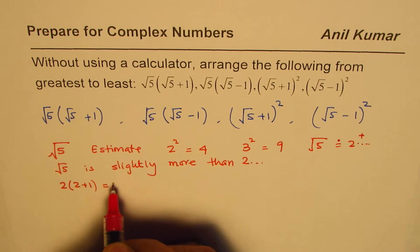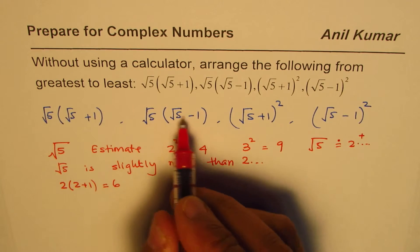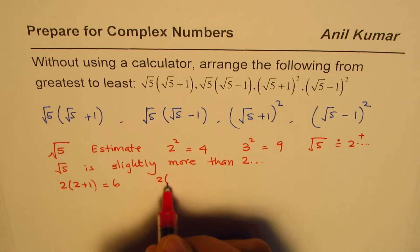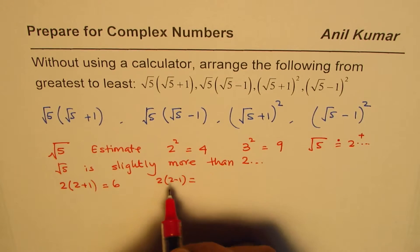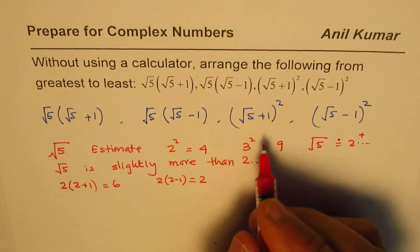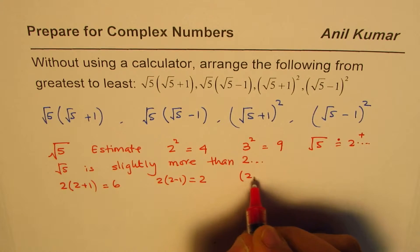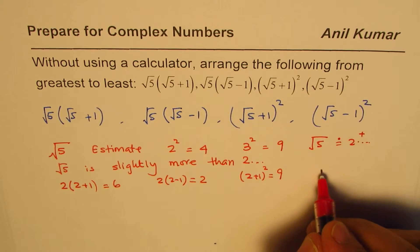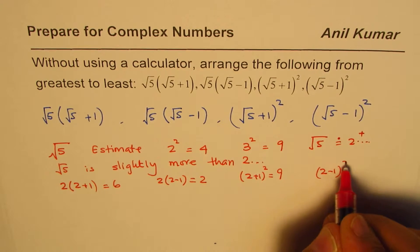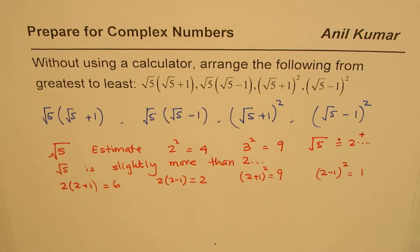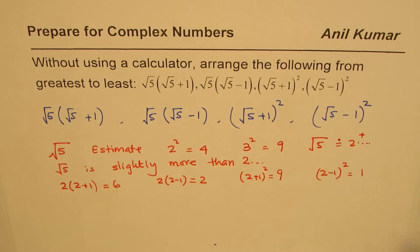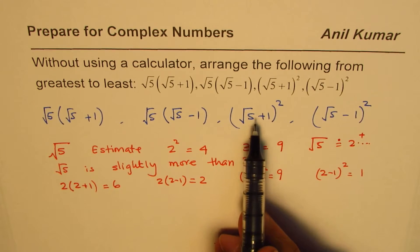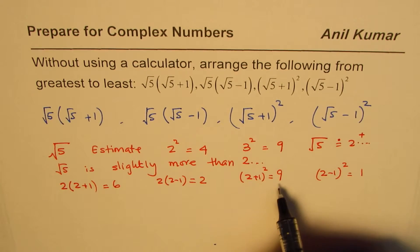Substituting 2 for √5: √5×(√5-1) becomes 2×(2-1)=2. Then (√5+1)² becomes (2+1)²=3²=9. And (√5-1)² becomes (2-1)²=1². So our estimated values are approximately 6, 2, 9, and 1.